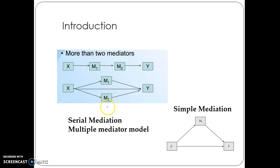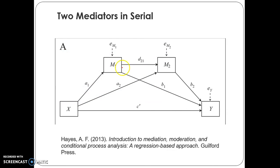We can also add M3, M4, M5, M6 and so on. Similarly, here we can also add M3, M4, M5 in between X and Y. But giving theoretical support for the three-path mediation model is very, very difficult — just imagine about the four-path or five-path mediation model. There is a simple example diagram taken from the book authored by Professor Hayes from Ohio State University in 2013.